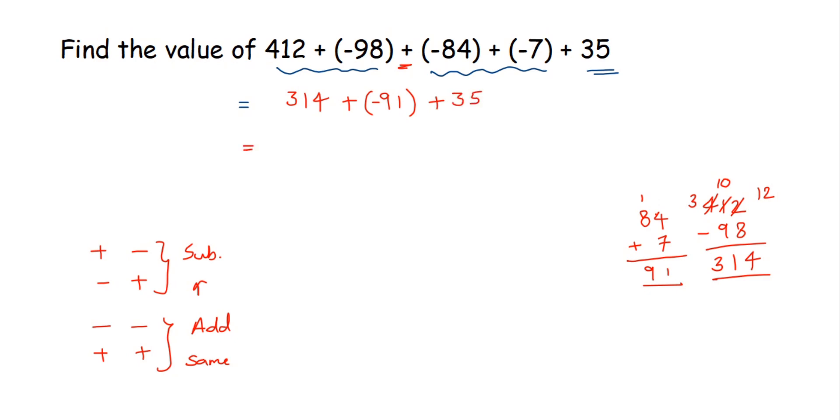Now we have 3 integers. Again you can take first two and then the third integer you can keep for the next step. Now we are adding integers of opposite sign which means we have to subtract. So we will subtract these two numbers. From 314 we have to remove 91.